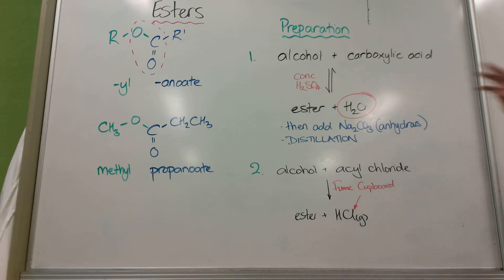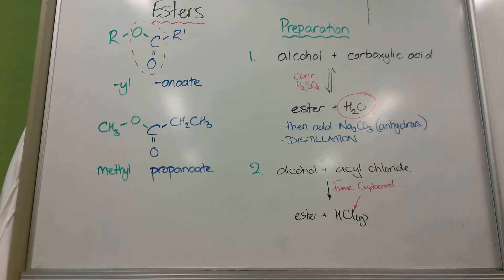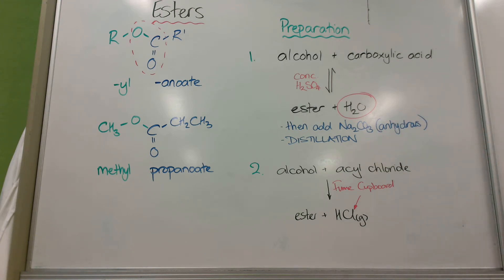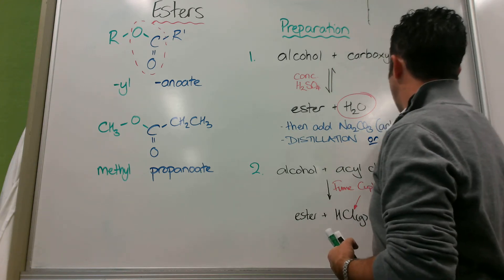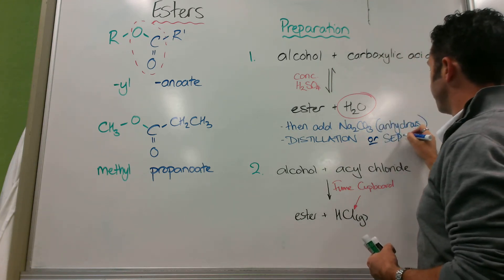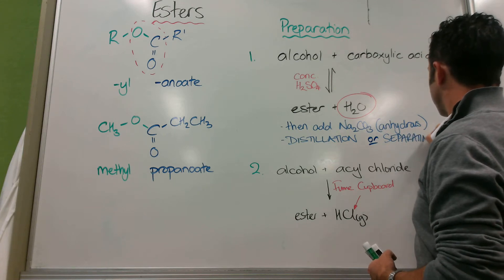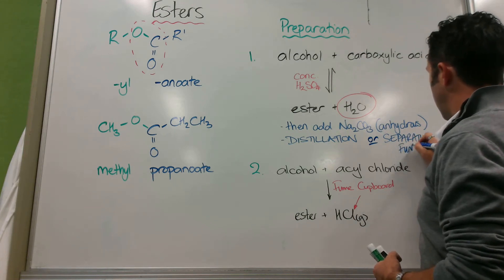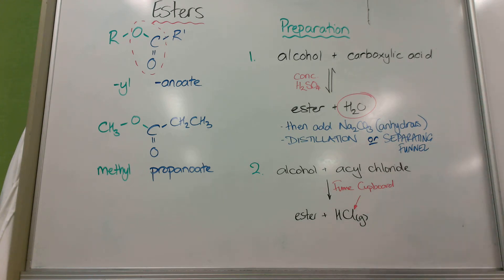We would often do this by distillation because the ester being non-polar will have probably the lowest boiling point. So we can collect it easily. Or we might not do it by distillation, but we might do it by reflux and then use a separating funnel. This works because we have an aqueous layer on the bottom and an ester layer on the top. So we can run the bottom layer out, chuck it out, and we're left with a pure ester on top.